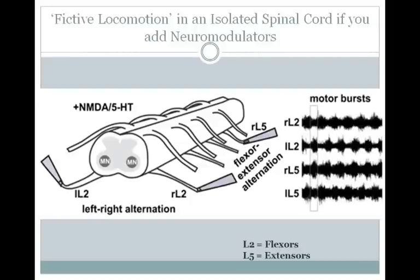You can also record what's called fictive locomotion in an isolated spinal cord. You first have to add neuromodulators like NMDA or 5-HT to get the fictive locomotion started, just like you need to move the treadmill to get the locomotion started in a spinalized animal. If you take out your spinal cord and place electrodes on the L2, or lumbar 2, lumbar 5, right and left ventral roots — those contain the motor neuron axons — you can record alternating behavior.